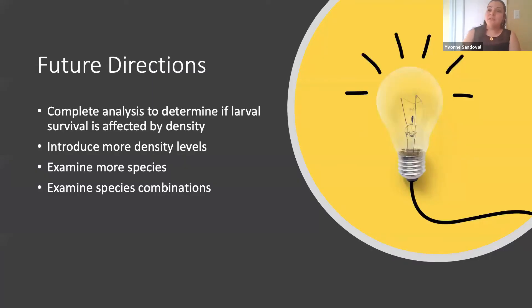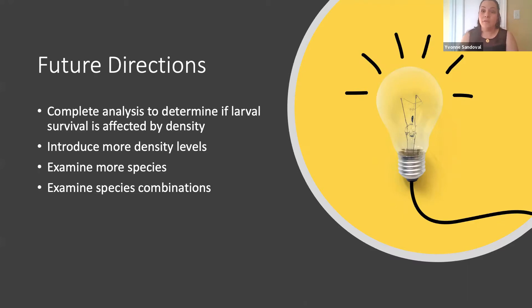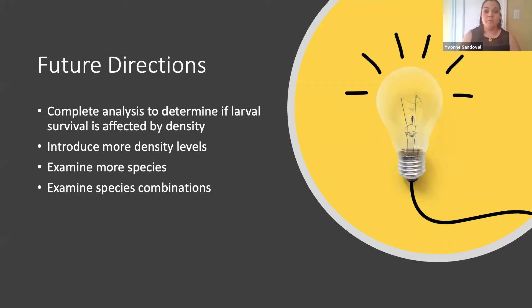Currently, I am in the process of quantifying mortality data of the larvae to show if density affects overall mortality. Next, I would like to examine more species since a crime scene involves multiple species competing for resources. One can also examine species-dependent effects in an environment with species combinations reflecting a real-world scenario where multiple species compete for the same resources.